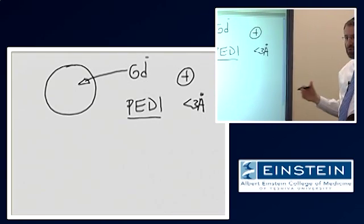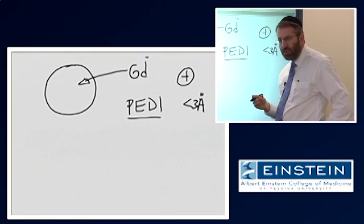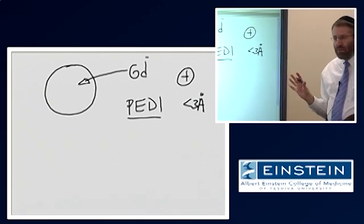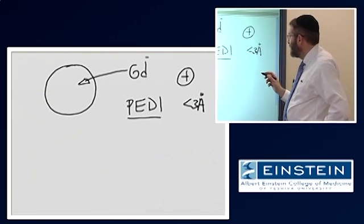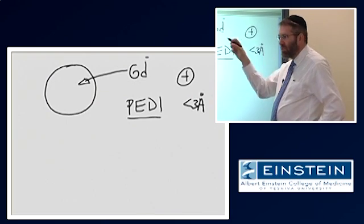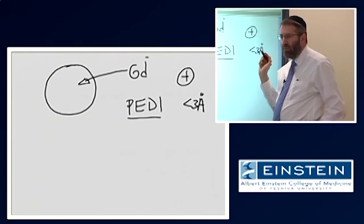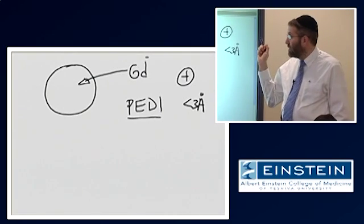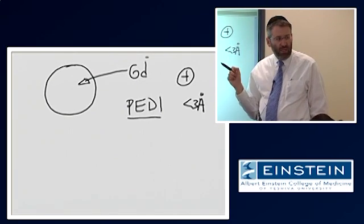This is an all-or-nothing effect. If they're close enough, this effect occurs. If they're farther than three angstroms from each other, the effect doesn't take place at all. This is a quantum-mechanical interaction whereby energy is exchanged from those protons onto the gadolinium electron.